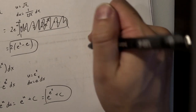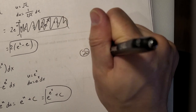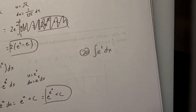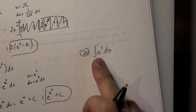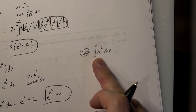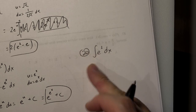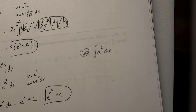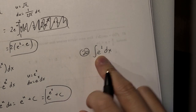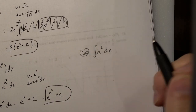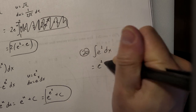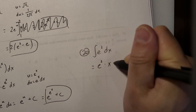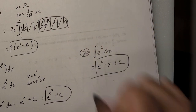This next one is even easier — don't overthink it. e² is just a constant, like π is a constant. e is approximately 2.7. So if it's a constant, the integral of a constant is just e²·x + c. Done.